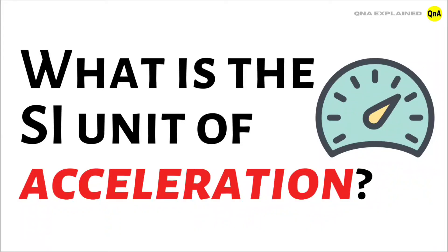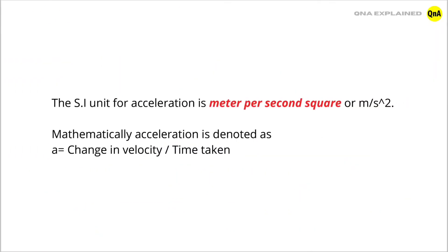What is the SI unit of acceleration? The SI unit for acceleration is meter per second square. Mathematically, acceleration is denoted as A equal to change in velocity upon time taken.